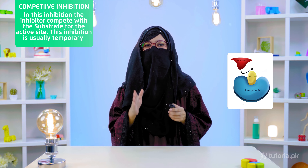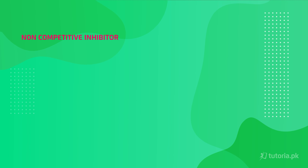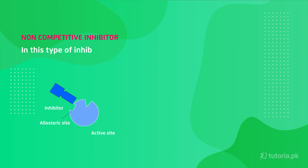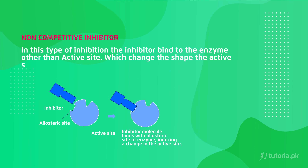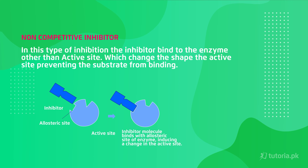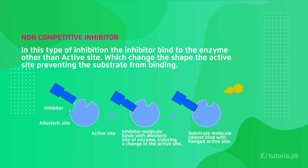Competitive inhibition is usually temporary, meaning it occurs only for a short time. The second type is non-competitive inhibition. In this, the inhibitor molecule does not bind to the active site of the enzyme; instead it binds to the allosteric site — the remaining structure of the enzyme outside the active site. When it binds there, it causes the shape of the enzyme's active site to change, so the enzyme cannot perform its reaction.